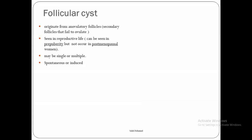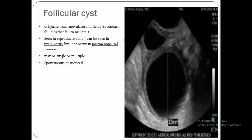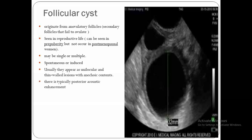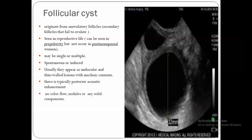Follicular cysts can also be seen in endometrial hyperplasia. Regarding ultrasound features, they are usually unilocular with a thin wall and anechoic contents. Usually there will be posterior acoustic shadowing. On color Doppler there is no color flow, and there are no solid components inside.